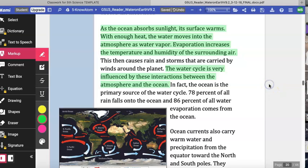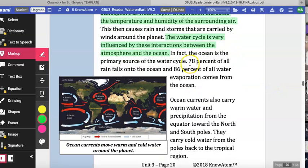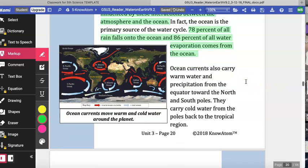In fact, the ocean is the primary source of the water cycle. 78% of all rain falls onto the ocean, and 86% of all water evaporation comes from the ocean. Ocean currents also carry warm water and precipitation from the equator toward the North and South Poles. They carry cold water from the poles back to the tropical region.